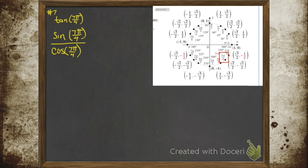So what's the sine? The sine is the y value. So that's minus √2/2. And the cosine is the x value, √2/2.